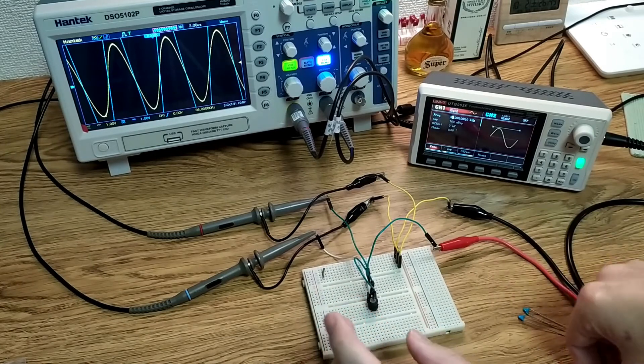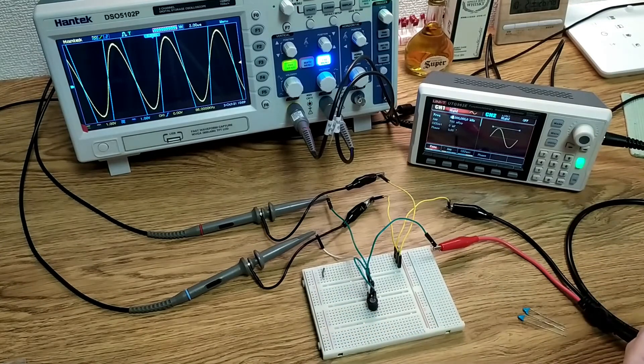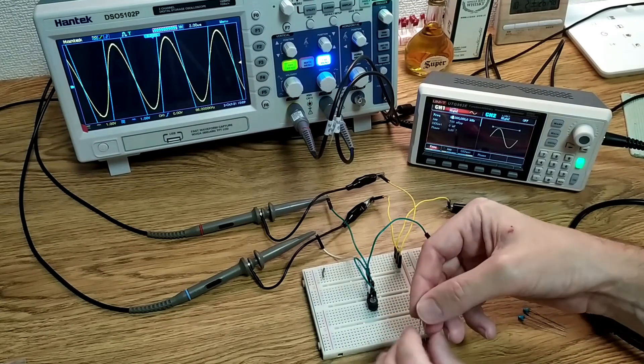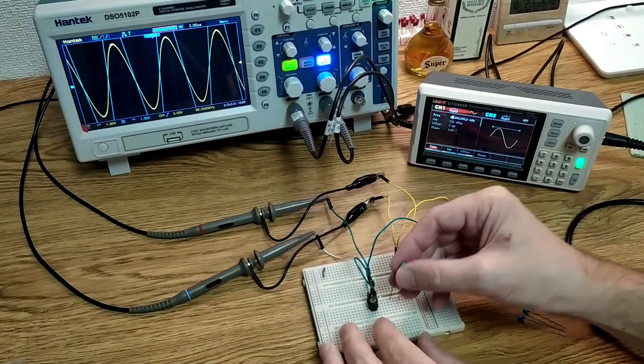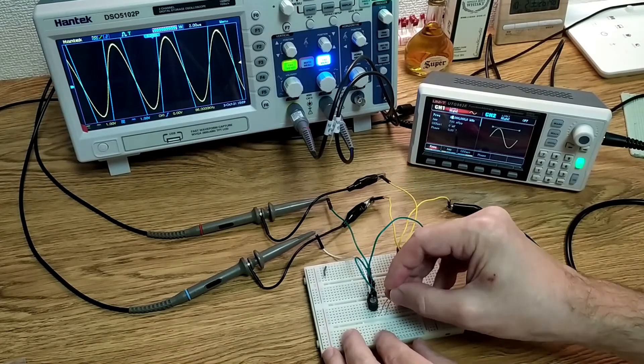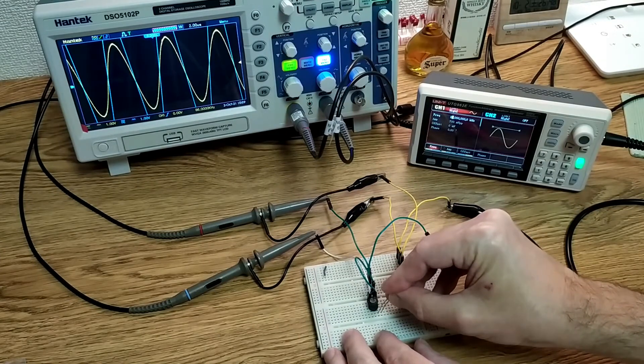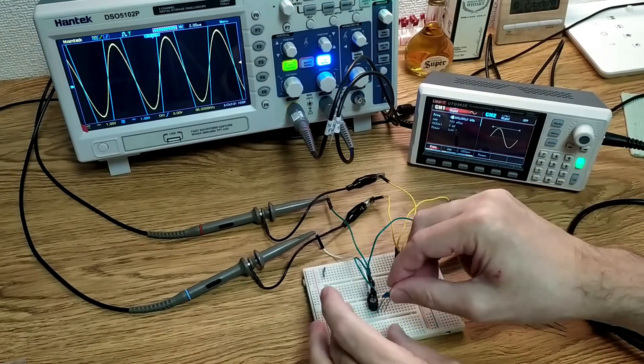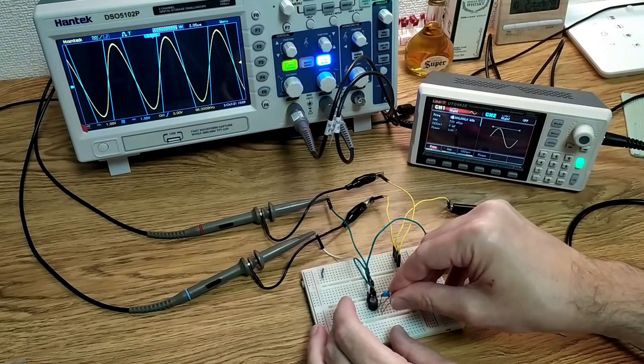If you remember from that CT7100 video, what I did was I put a 331 and a 471 in series, which gets pretty close to the values that we need. So let's do that here and see what happens.